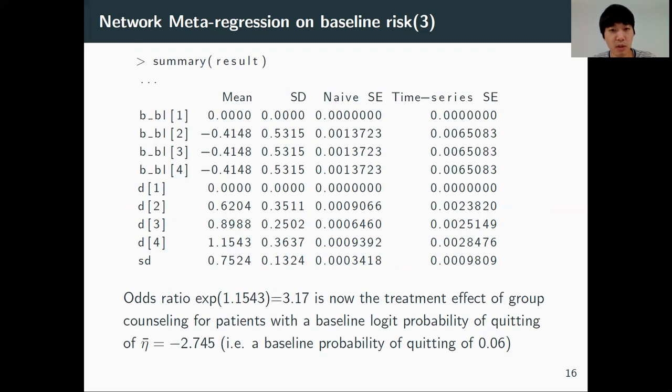So this is the summary of the result. And now we have a new parameter BBL, which is the regressor for the baseline risk regression coefficient. So now the interpretation for the odds ratio, which is 3.17, is now the treatment effects of group counseling for patients with baseline probability of quitting of 0.06.